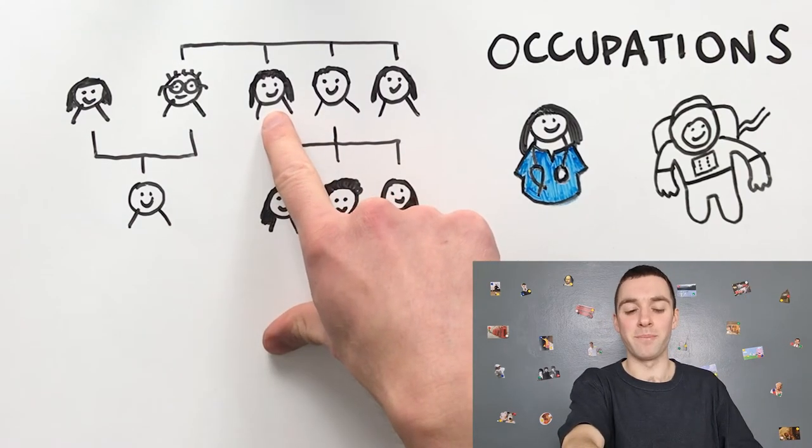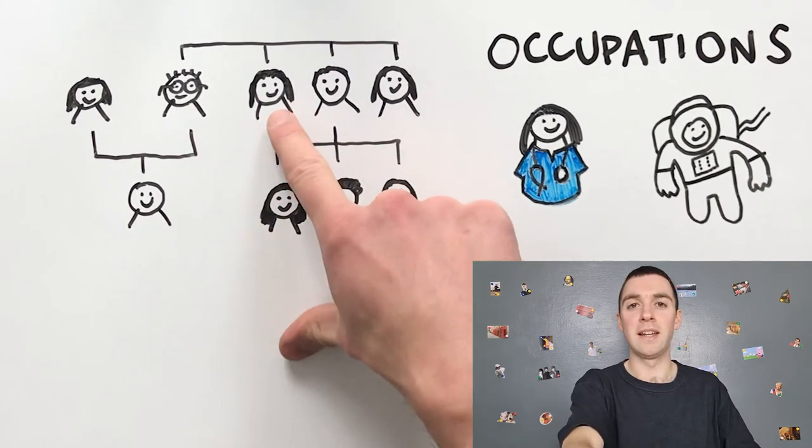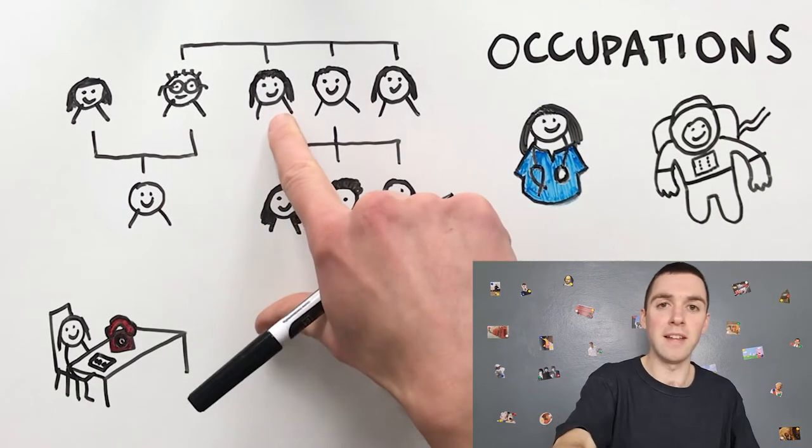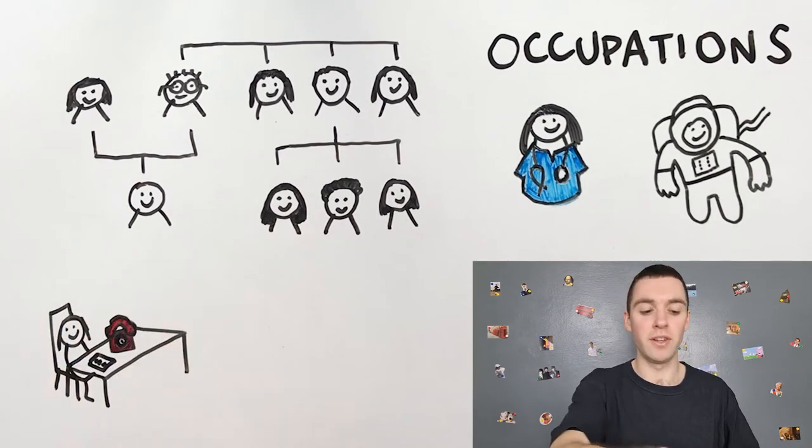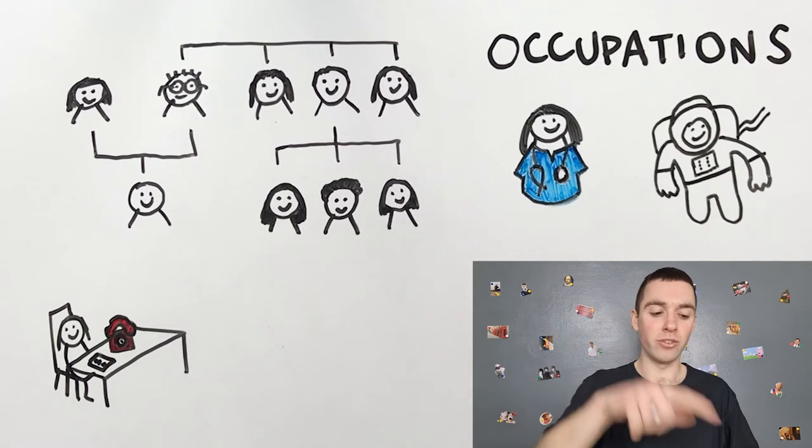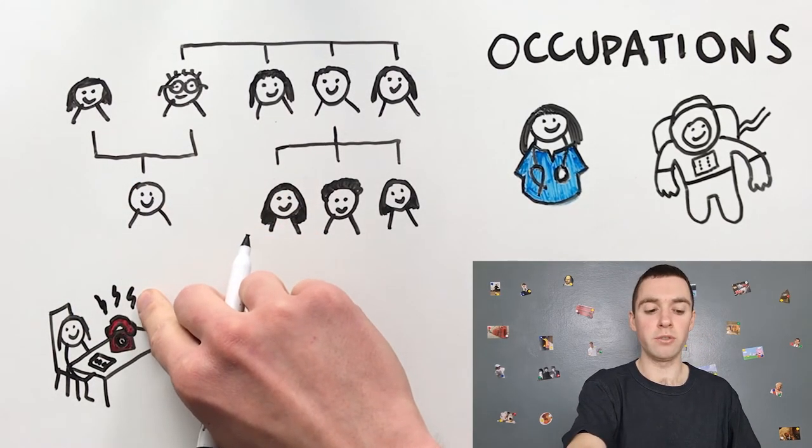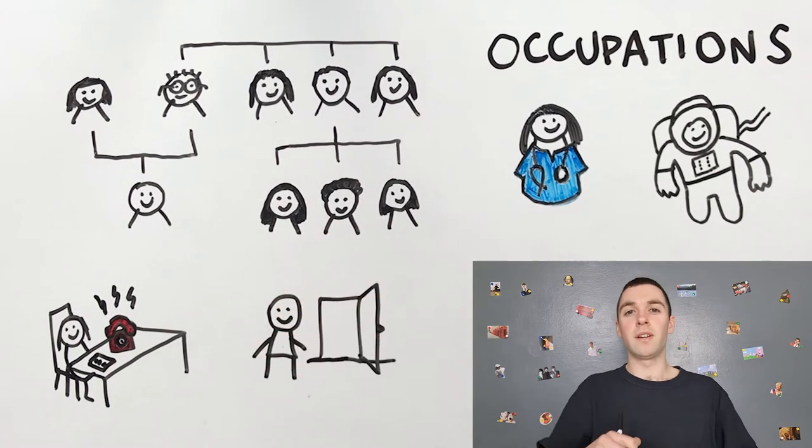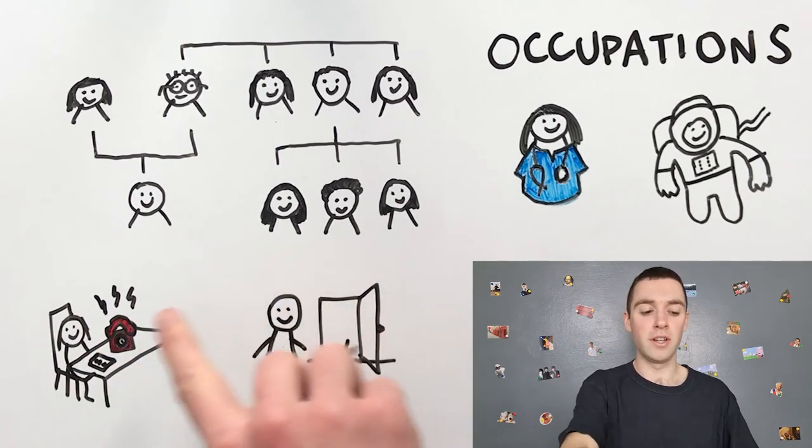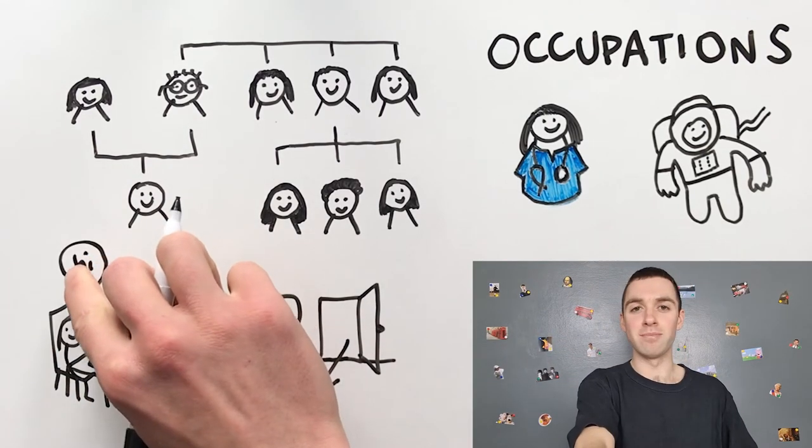This is my auntie. This is my father's sister. She is a receptionist. My auntie answers the phone when it rings. Hello? And when someone comes into her office, she says hi or hello.